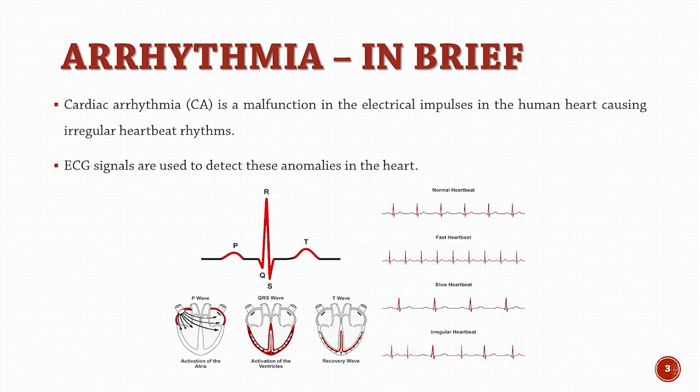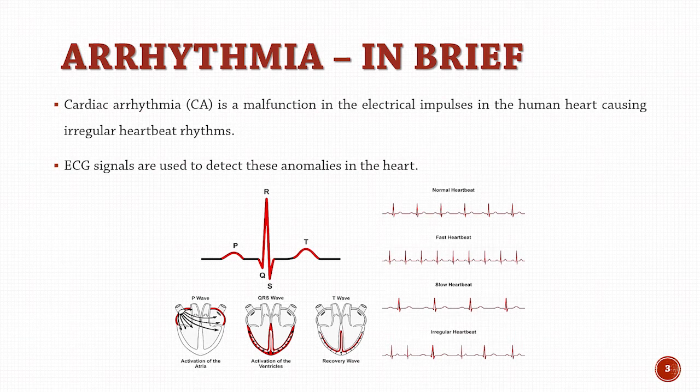Most arrhythmias are not severe and do not cause complications. Some, however, can increase the risk of stroke or cardiac arrest. ECG signals are used to detect these anomalies in the heart. The pattern and periodicity of the ECG signals are used to analyze the condition of arrhythmia. The figure below shows the slow, fast and irregular heartbeats.